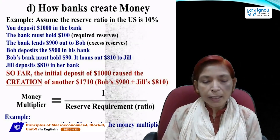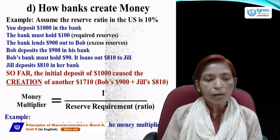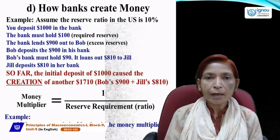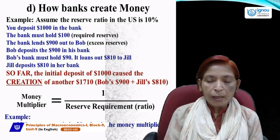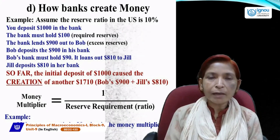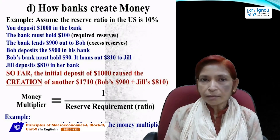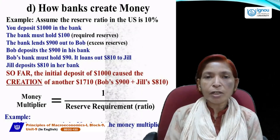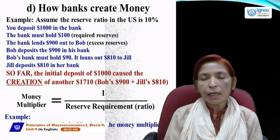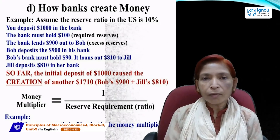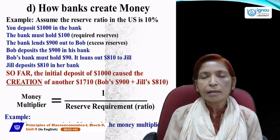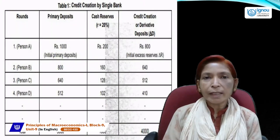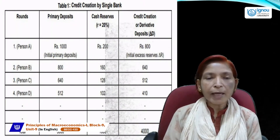Money multiplier = 1 / reserve requirement. As required reserve ratio or CRR increases, money multiplier decreases. Credit creation is inversely related with CRR: if CRR is higher, credit creation is lower; if CRR is lower, credit creation is higher. This is the credit creation process assuming only a single bank exists in the economy.